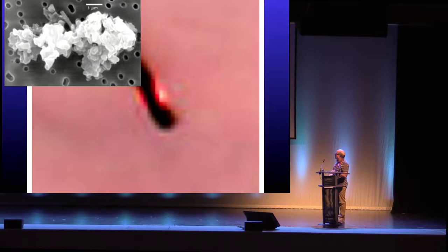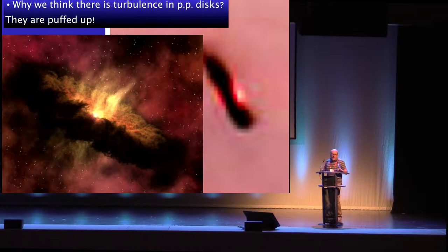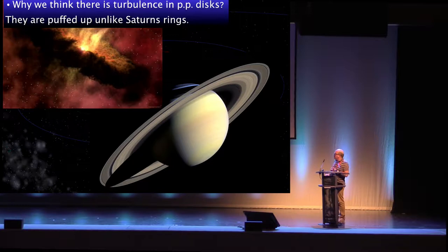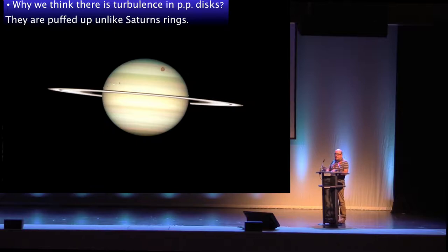You see a little bit the scattered light above and below the disk, and a big shadow, which means the disk is full of gas but also full of little dust grains from which we form our planets. We believe these disks are turbulent not only because of angular momentum and mass transfer to the star, but also because these disks are thick. If there were no gas and no turbulence, they should be very thin like Saturn's rings.